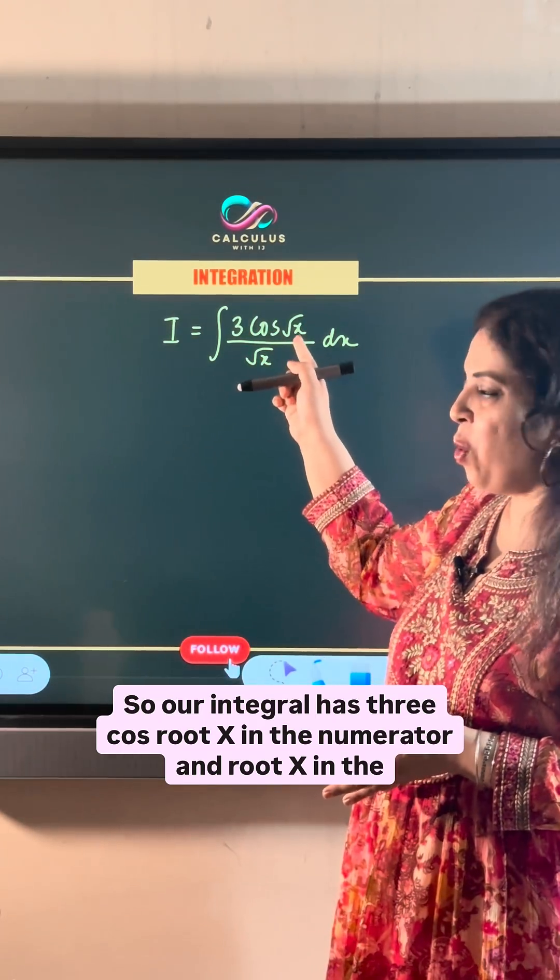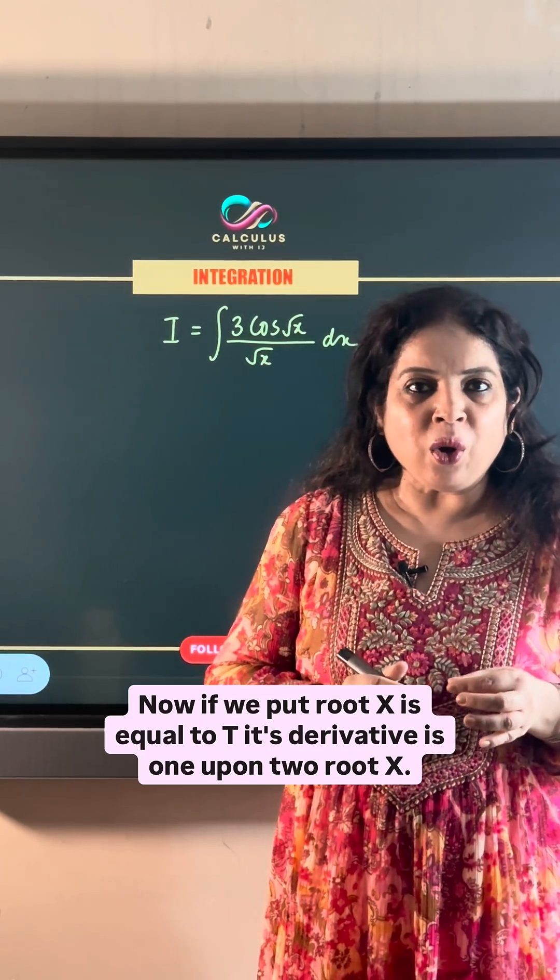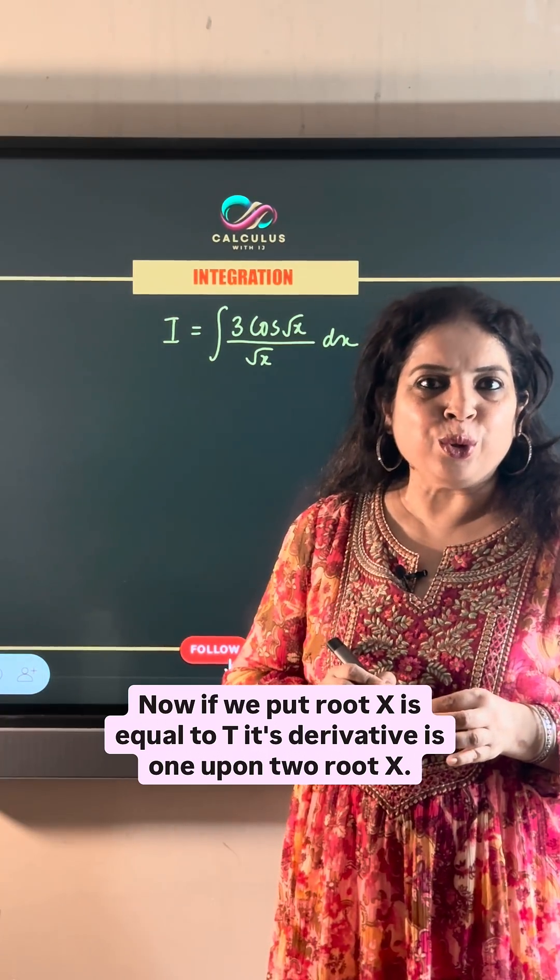So, our integral has 3 cos root x in the numerator and root x in the denominator. Now, if we put root x is equal to t,